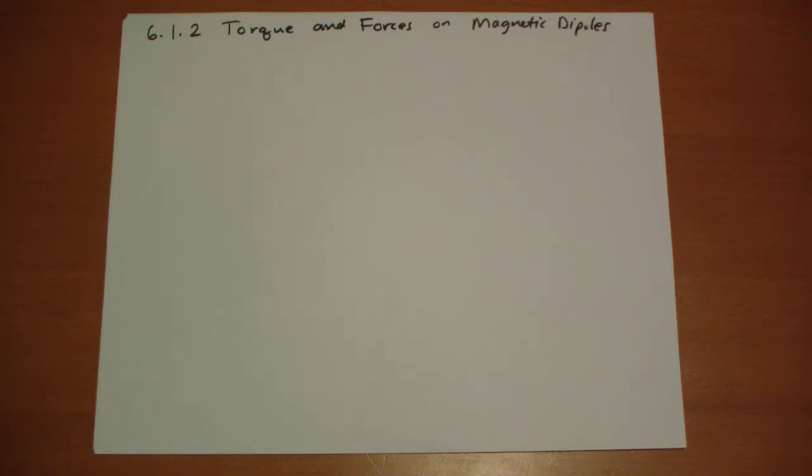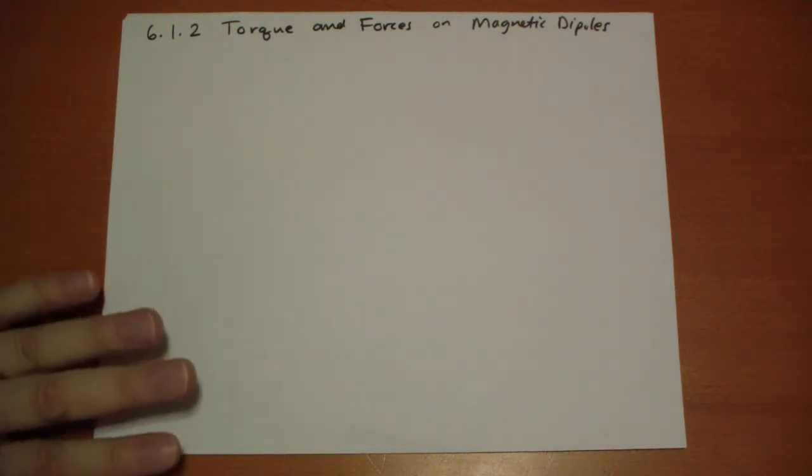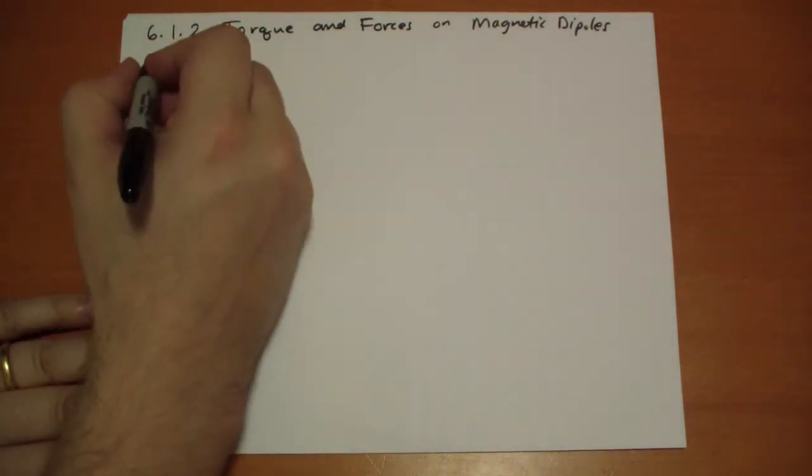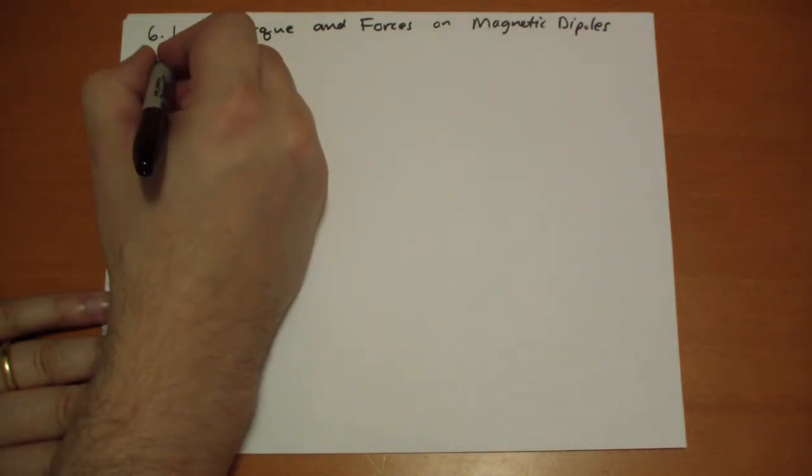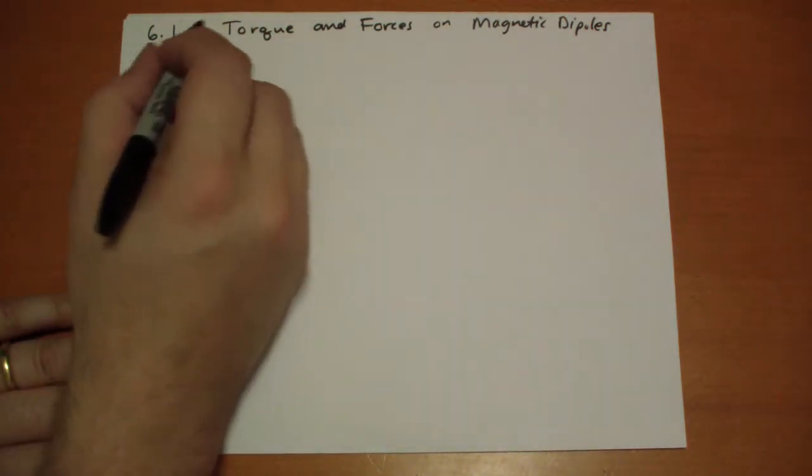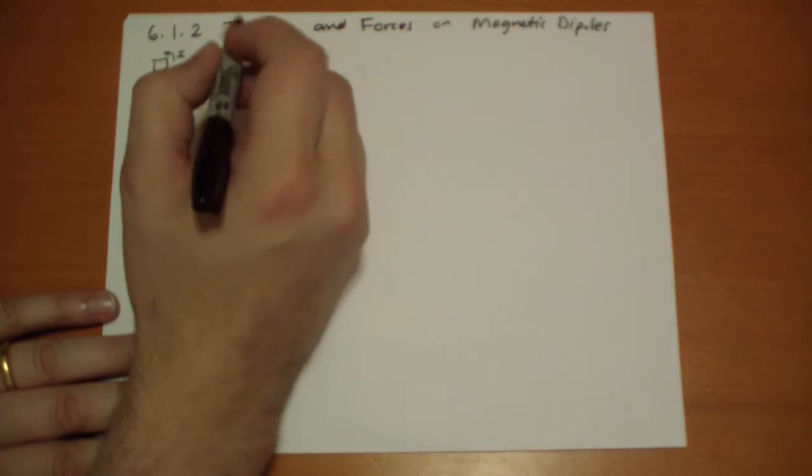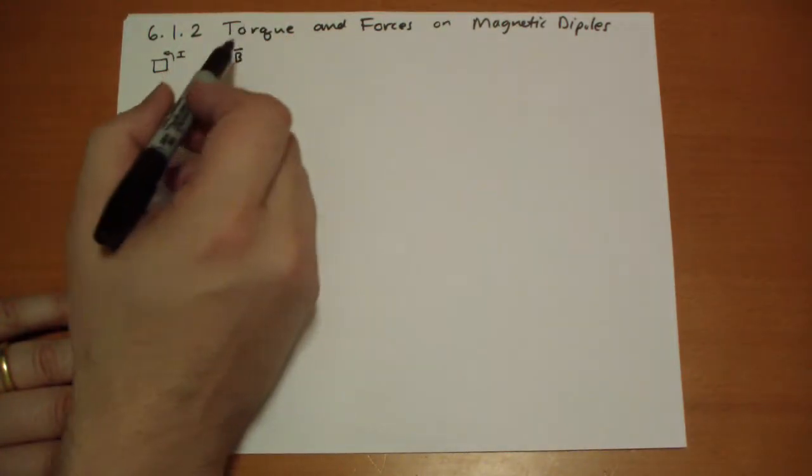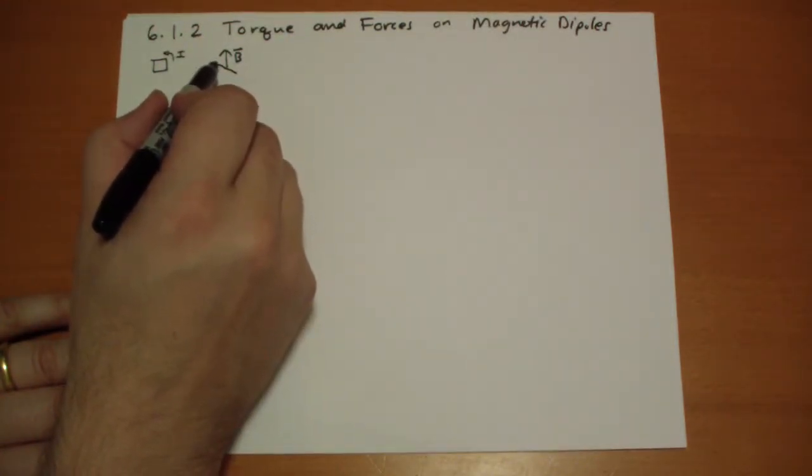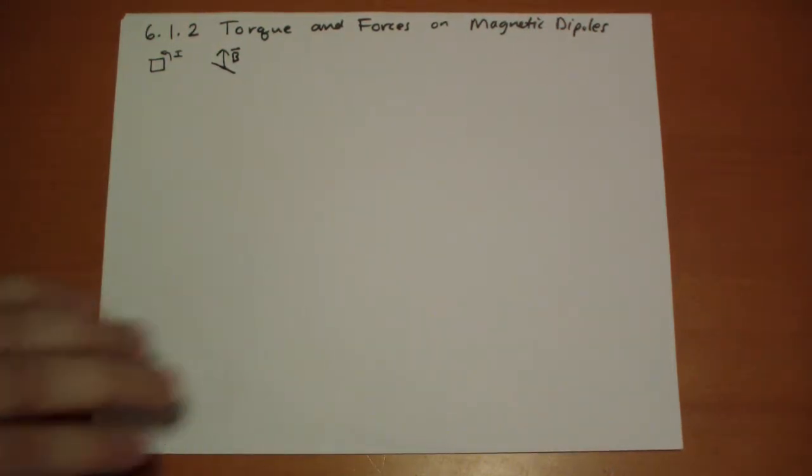So if we put a magnetic dipole into a magnetic field, for simplicity's sake we're going to deal with a square ring with current going around this, and we're going to align it such that the magnetic field is pointing up while the ring is aligned kind of at an angle like that with it.